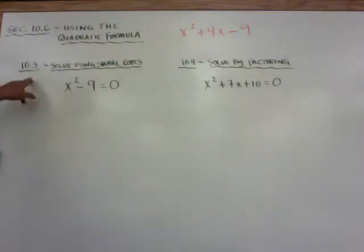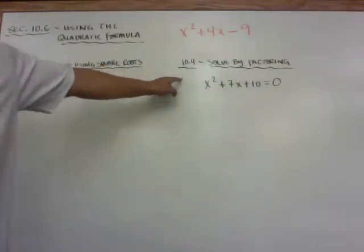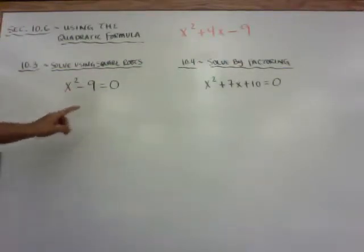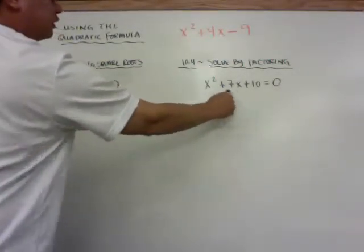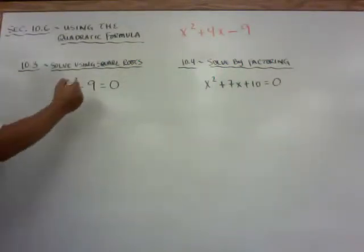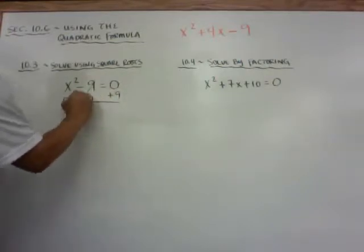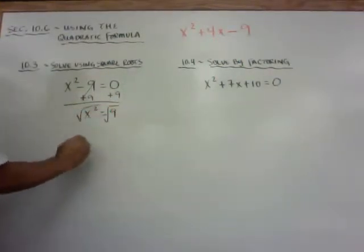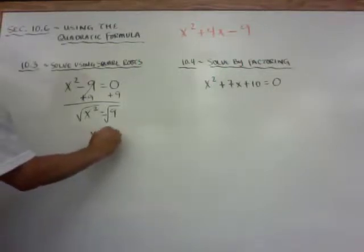If you remember, in section 10.3, we solved quadratic equations using square roots. And in 10.4, we solved by factoring. 10.3, we could solve by square root because there is no middle term. It's just a binomial. They didn't have that middle x term. So as a quick reminder, all we did was add 9 to both sides to cancel that out. X squared equals 9. And this is where you took your square root. And x was equal to plus or minus 3.